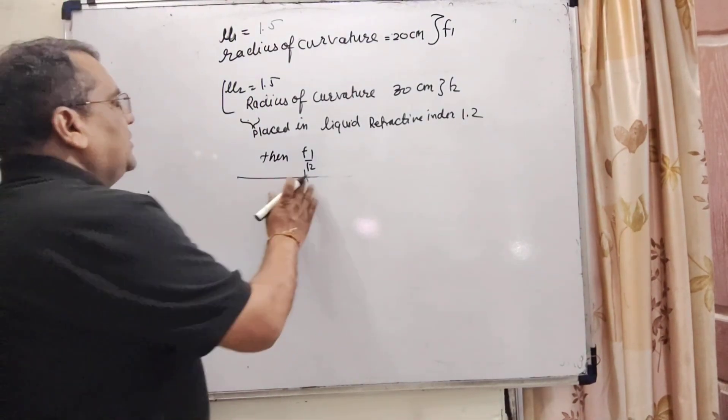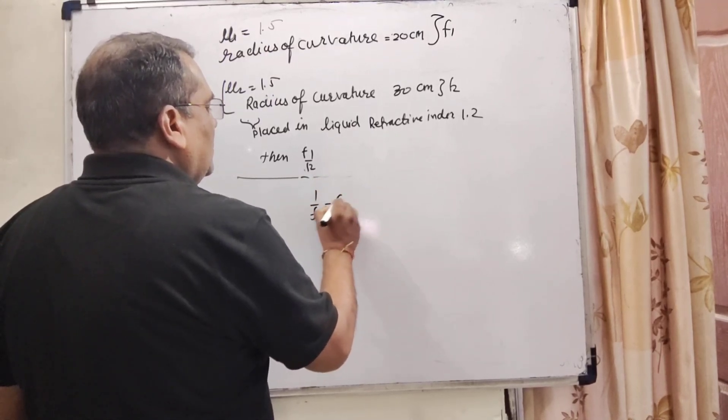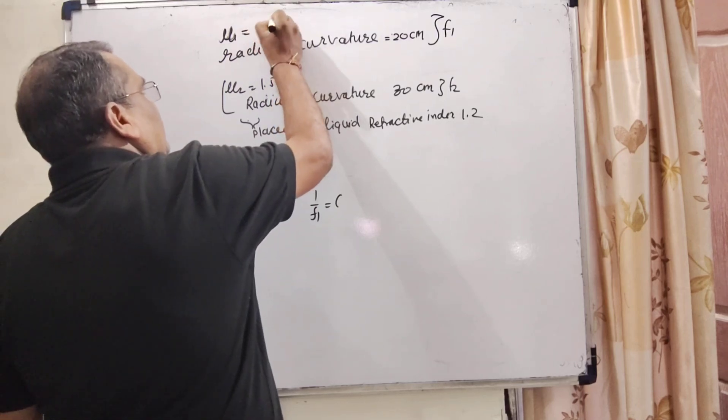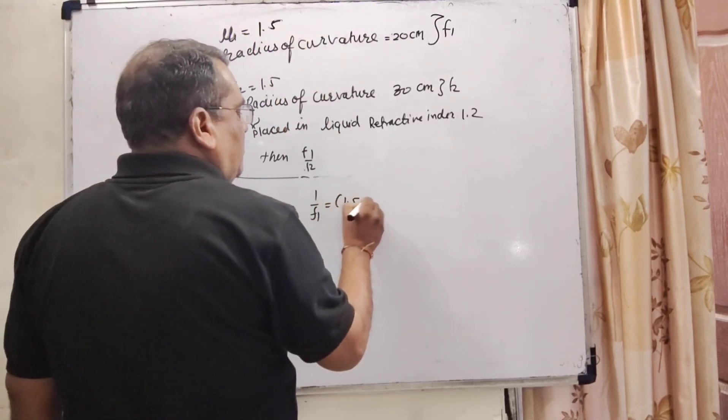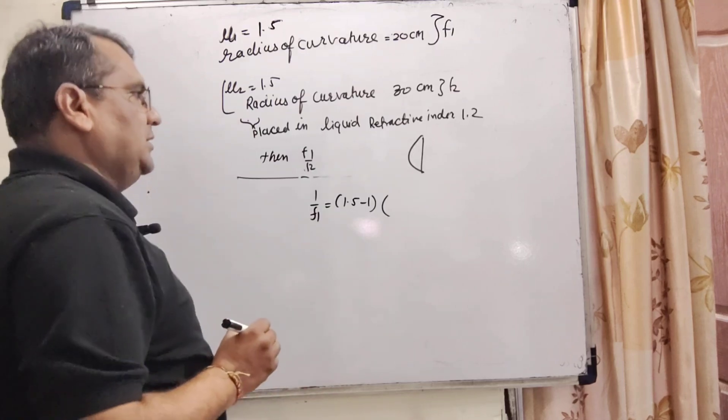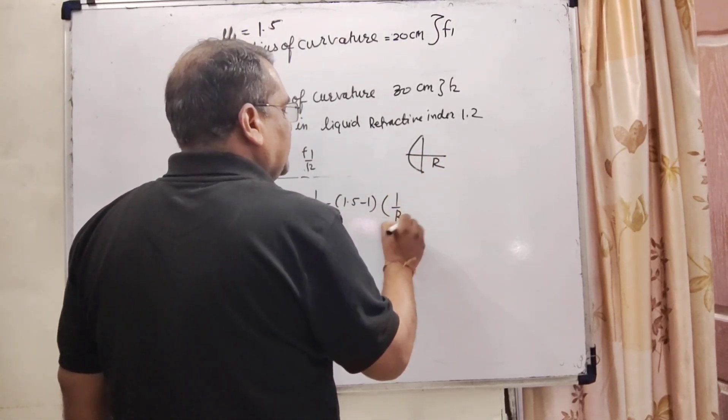Now for the first lens we have using 1 by f1. Here mu refractive index of first lens that is 1.5 minus 1 for plano convex lens radius of curvature. This is r1 by r positive minus plane surface for radius of curvature. That is radius of curvature is infinity.